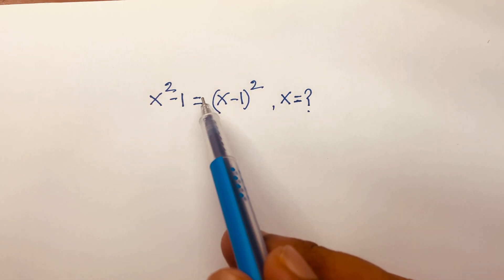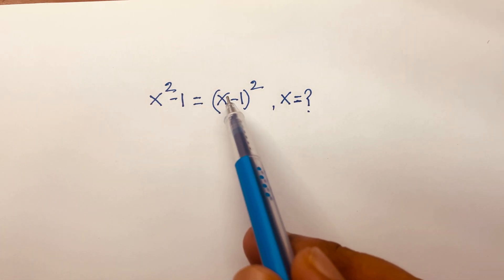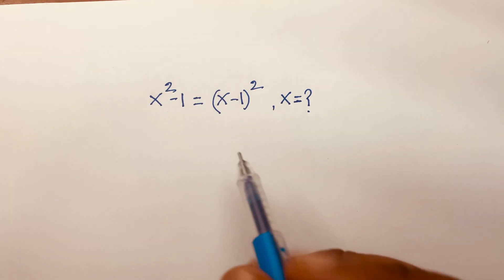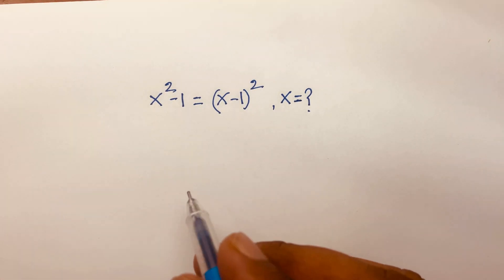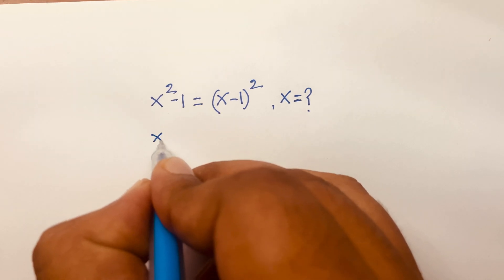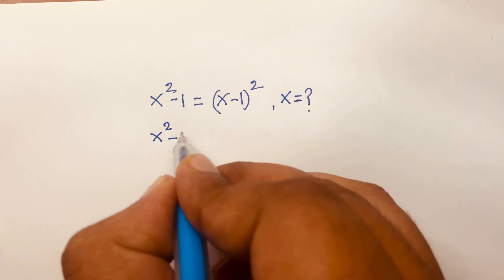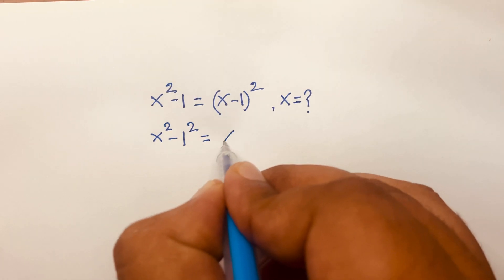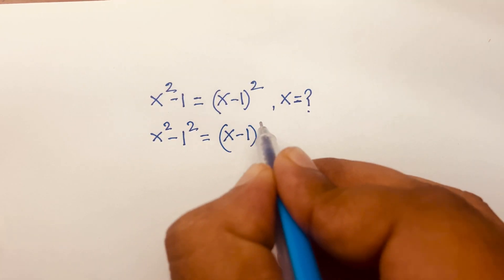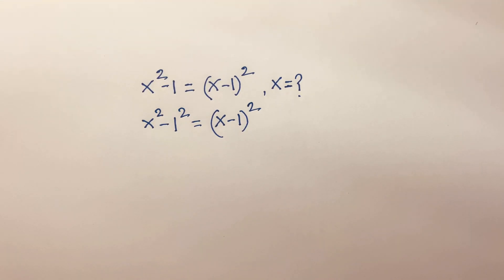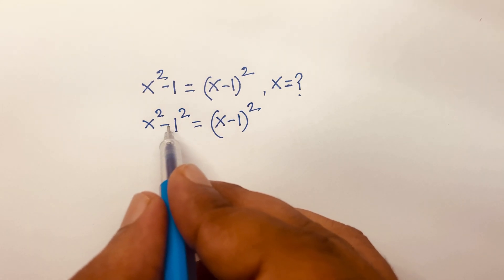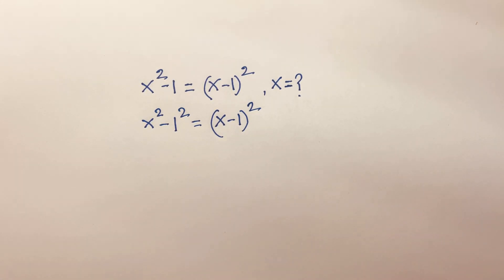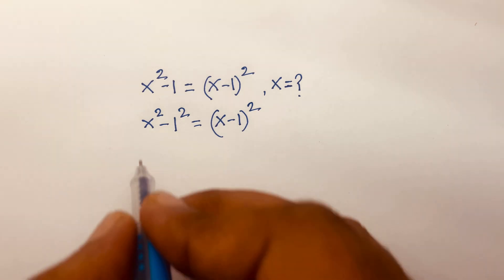How to solve x squared minus 1 equals (x minus 1) squared. We'll find the value of x in this equation. First, I can write x squared minus 1 as (x squared minus 1 squared), and we know that a squared minus b squared equals (a plus b)(a minus b). According to this rule, x squared minus 1 equals (x+1)(x-1).